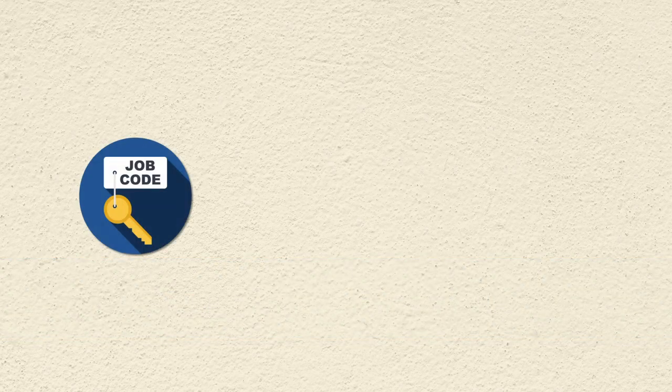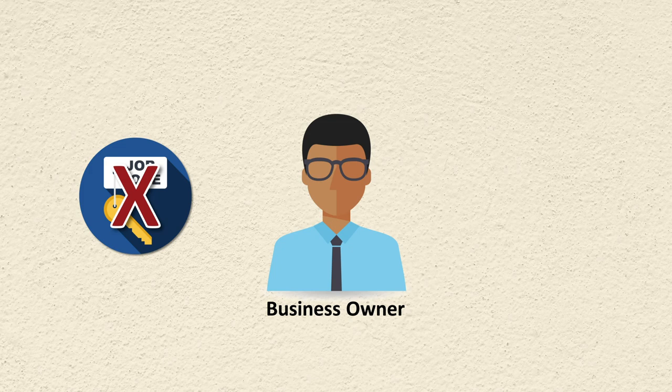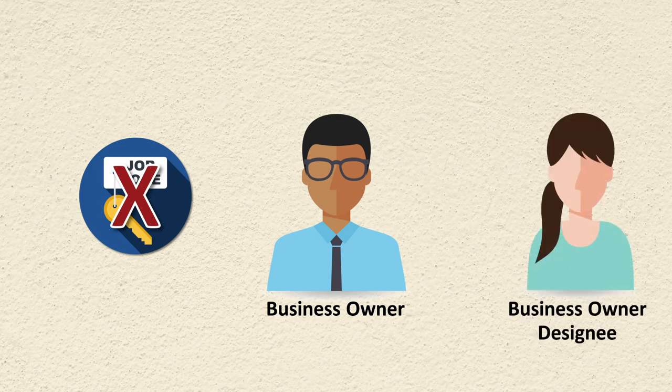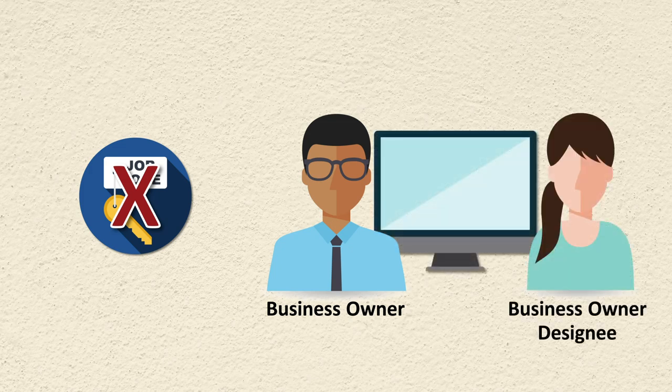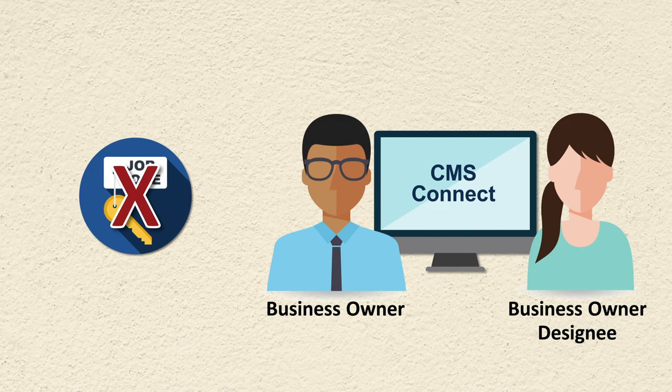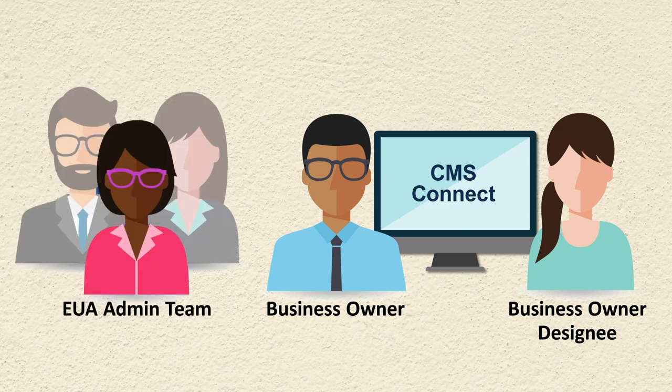In order to have a job code deleted, either the business owner or business owner designee should submit a service request. This could be completed by an emailed request to the CMS IT Service Desk or directly in the CMS Connect Portal. Only the EUA admin team can delete a job code from EUA.